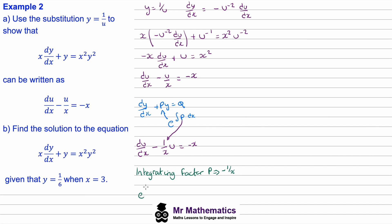The integrating factor is e to the power of the integral of negative 1/x dx. The integral of 1/x is ln x, so we get e to the power of negative ln x, which equals e to the ln of x to the negative 1. The e and natural log cancel, giving an integrating factor of 1/x.